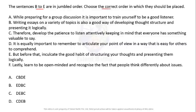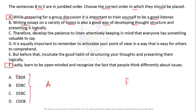The sentences B to E are in jumbled order — choose the correct order. Statement A is fixed: 'While preparing for the group discussion it is important to train yourself to be a good listener.' Sentence C says 'therefore develop the patience to listen attentively, keeping in mind that everyone has something valuable to say' — 'therefore' marks a conclusion, so something must come before C. Sentence A talks about being a good listener, and C follows naturally.